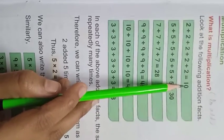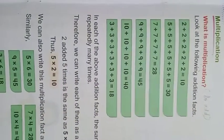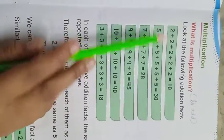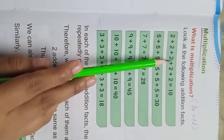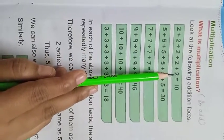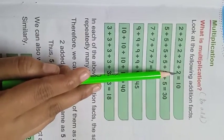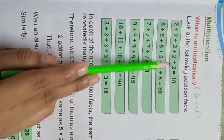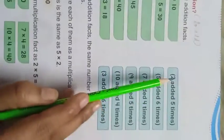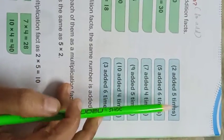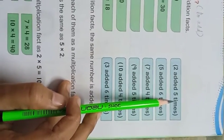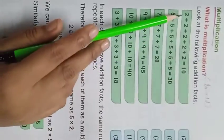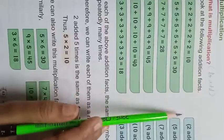If you see in the first box, ten toffees ho jaayengi, right? So, two ko hamne kitni times add kiya? One, two, three, four, five. Two added five times. Two ko hamne kitni baar add kiya? Five times add kiya. So hamne kya mila - ten. Yani, two, five are ten.